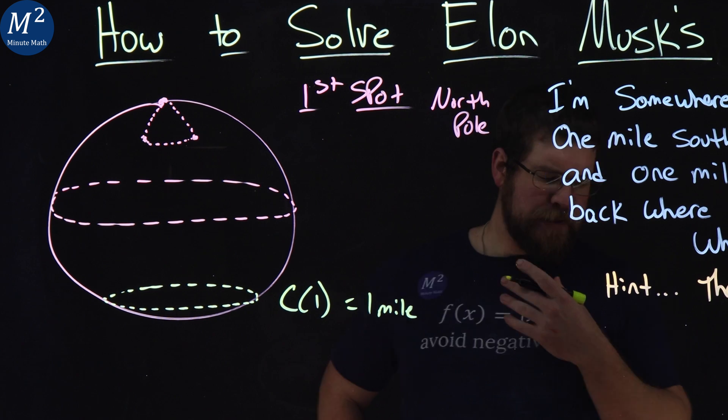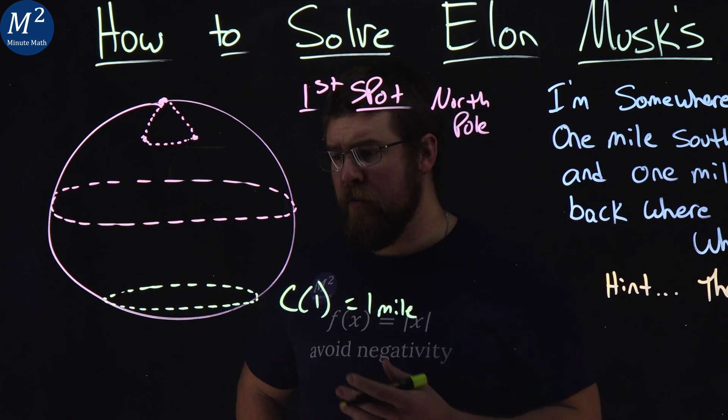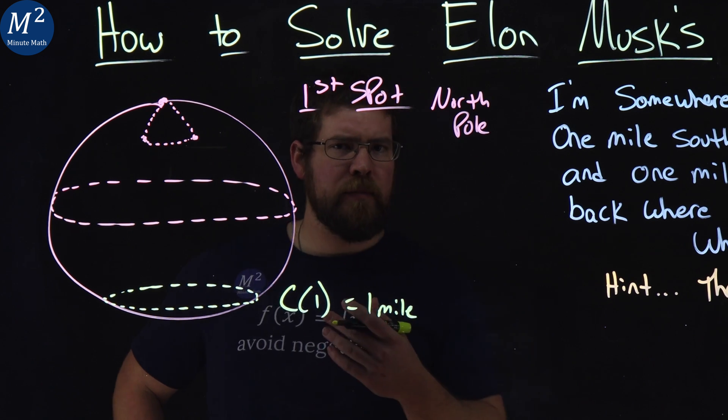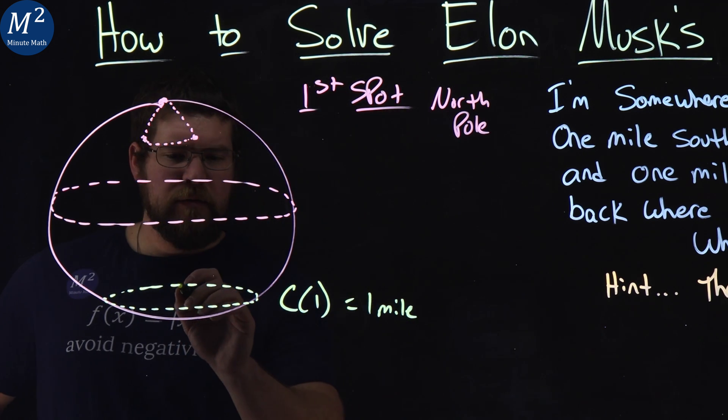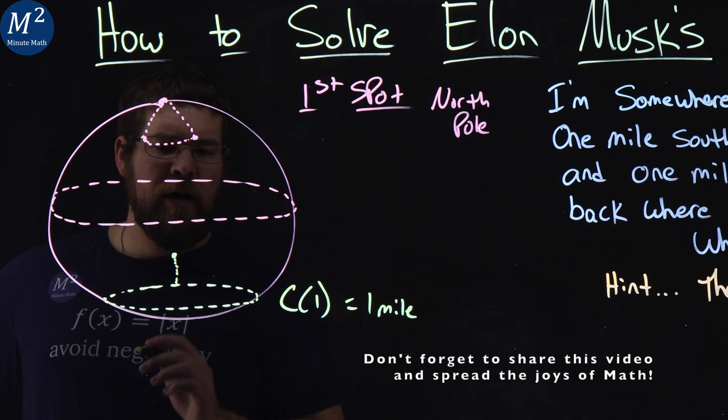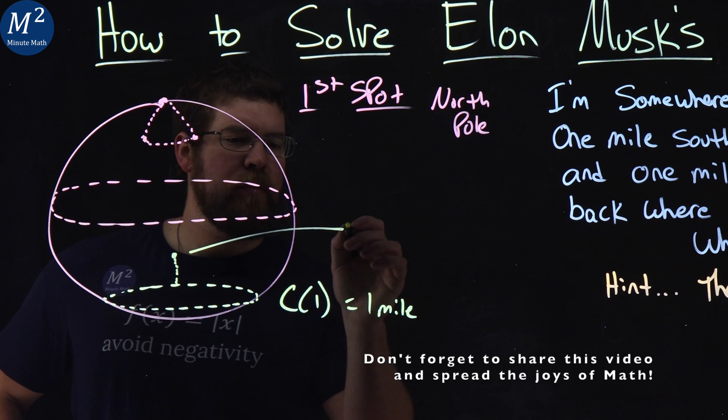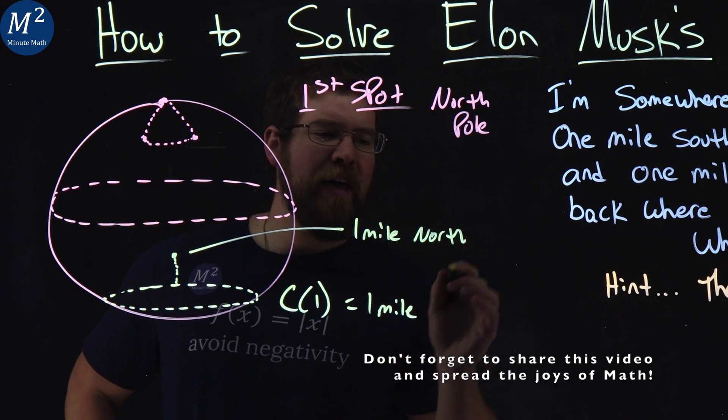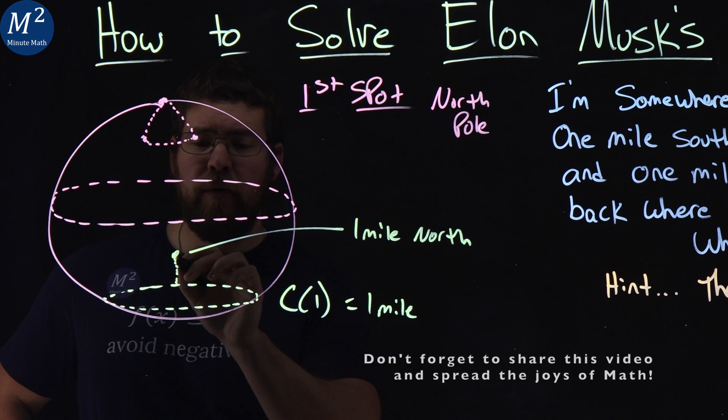Well, if we pick a spot north of this that's one mile north, what happens? So if we pick a spot on this circle, or anywhere on it, right here, that's one mile north, and choose that as our spot, what happens?